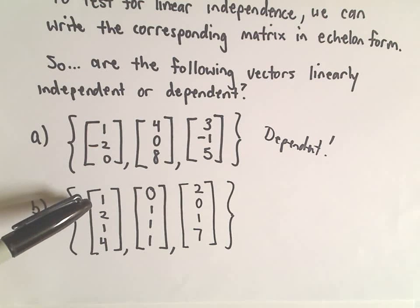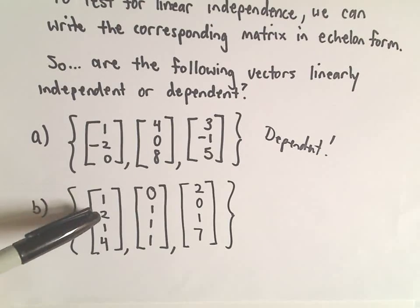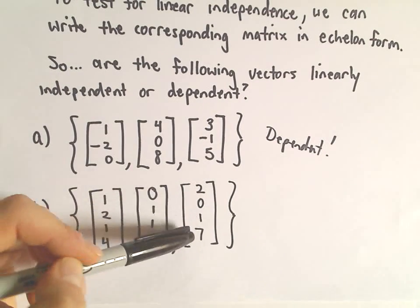So again, we've got three vectors: the vector with components 1, 2, 1, 4; then 0, 1, 1, 1; and 2, 0, 1, 7.